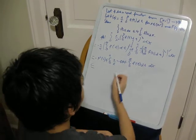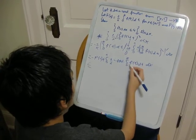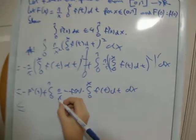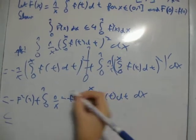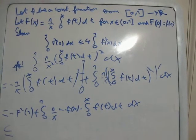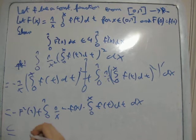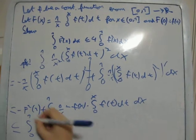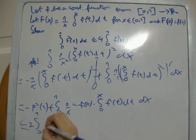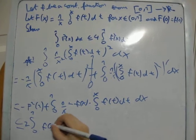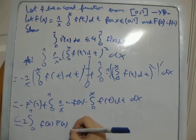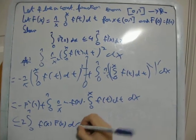This one is big F of x, right? Then this is less than or equal to the integral from 0 to 1 — you could just take the 2 outside — you would have f of x times big F of x dx.